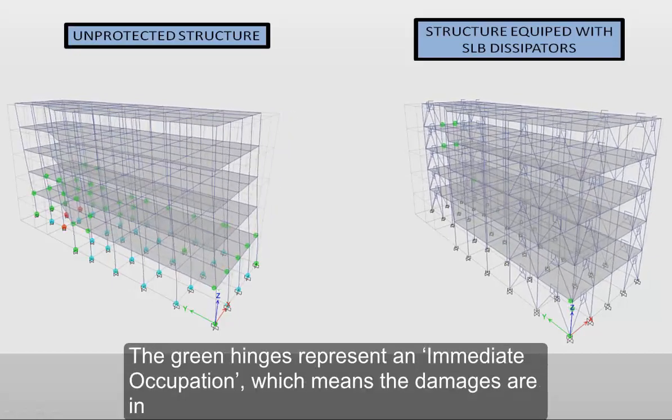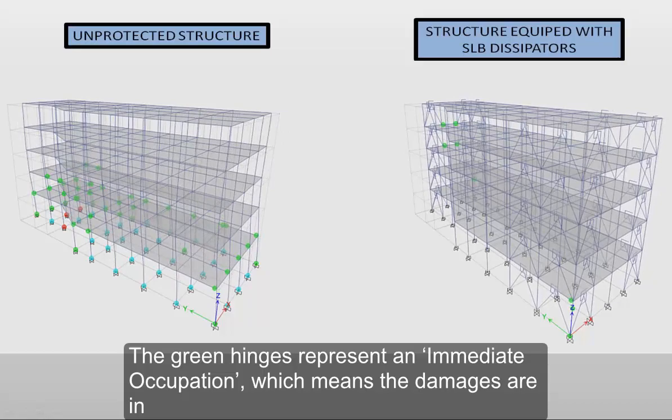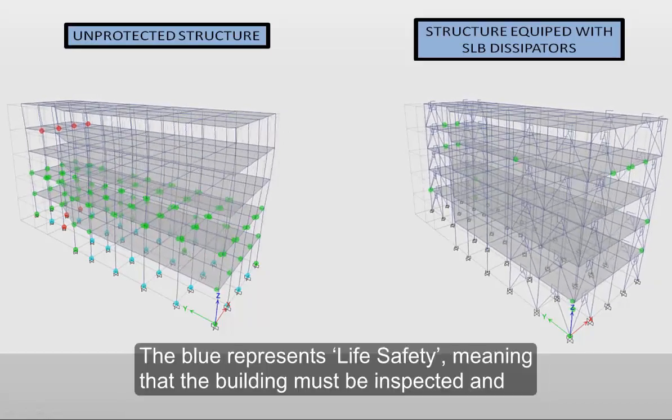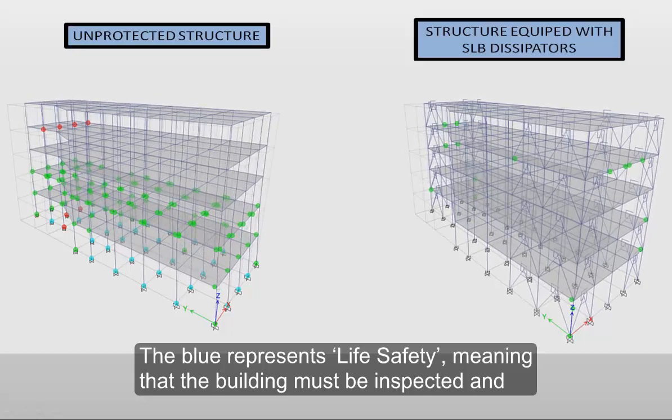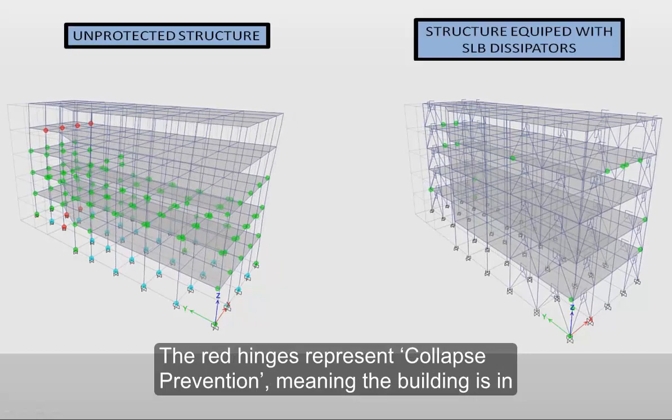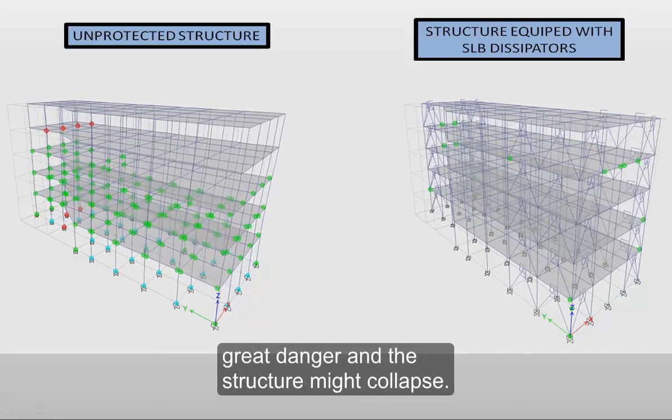The green hinges represent an immediate occupation, which means the damages are in the acceptable range. The blue represents life safety, meaning that the building must be inspected and might need repair. The red hinges represent collapse prevention, meaning the building is in great danger and the structure might collapse.